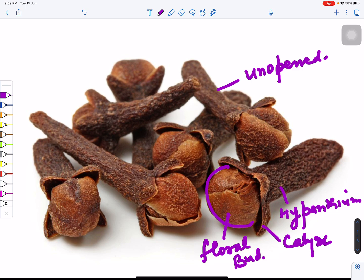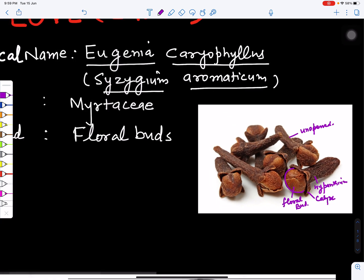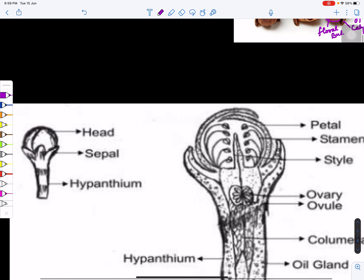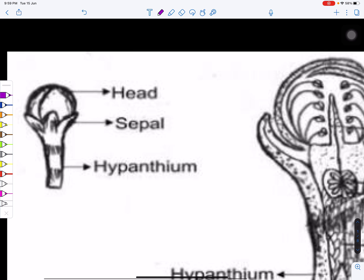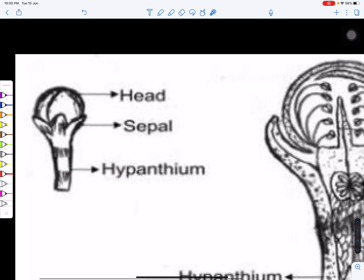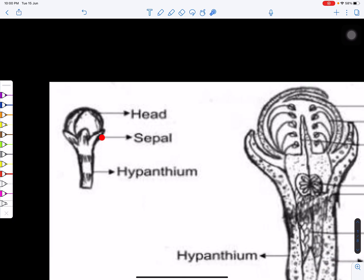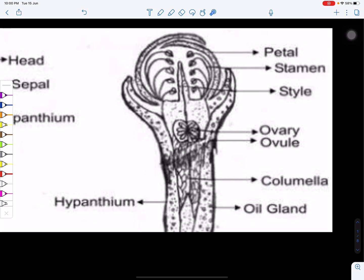Now we'll see the structure of a floral bud. You can see here, as I have already told you, this part is hypanthium - this is the lower floral part of the floral bud. And this is sepal and this is the floral part.